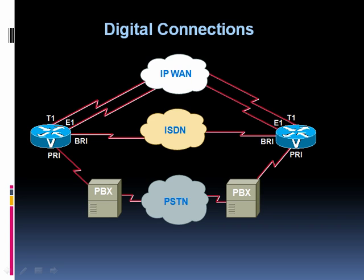A PRI circuit is going to use one of the 24 channels on a T1, or one of those 32 channels on an E1, to send a signaling protocol.